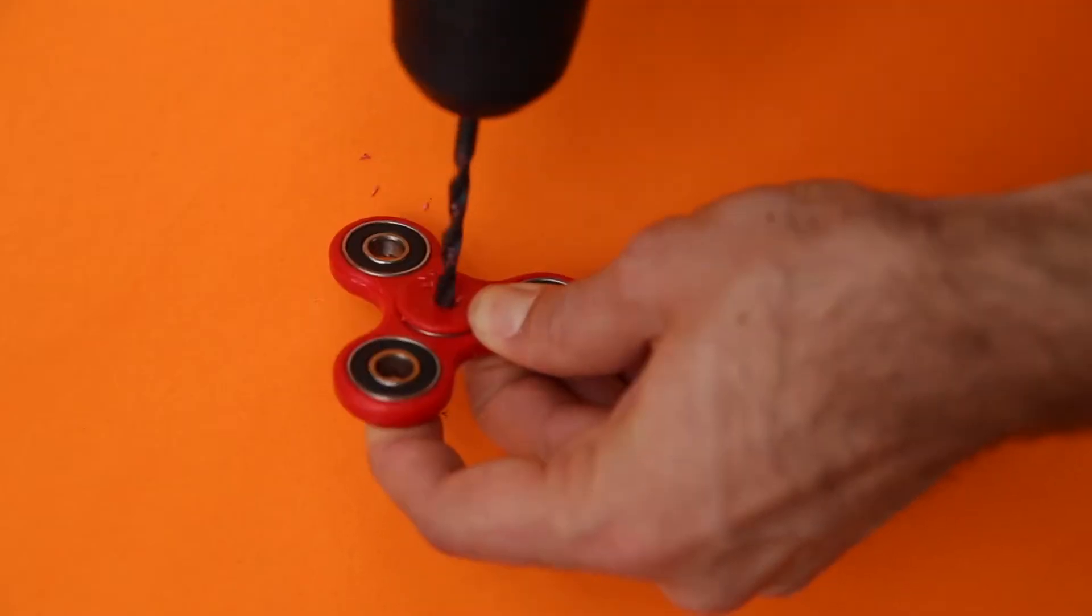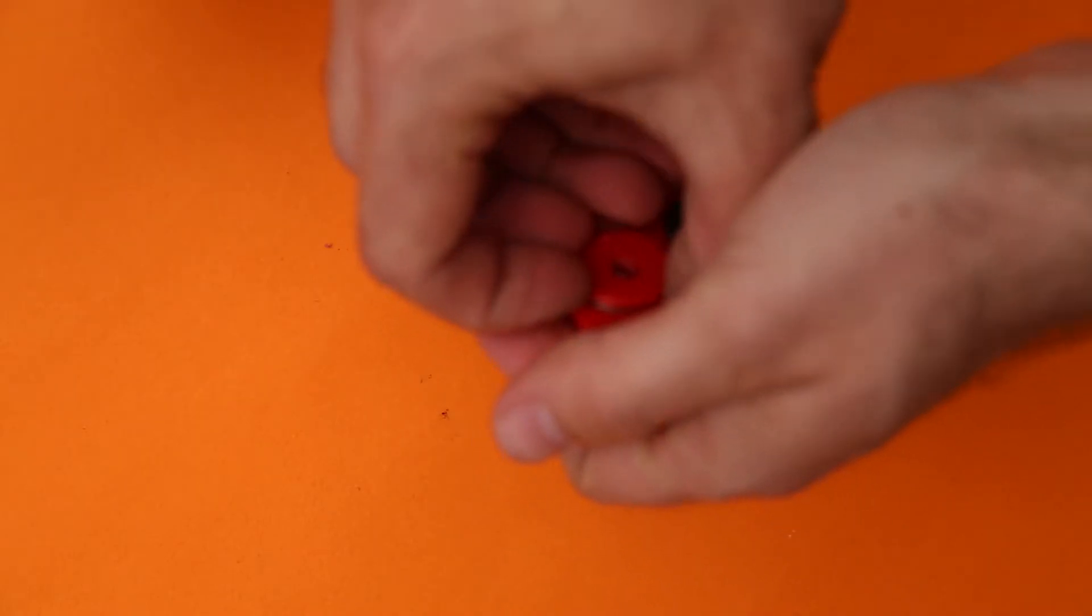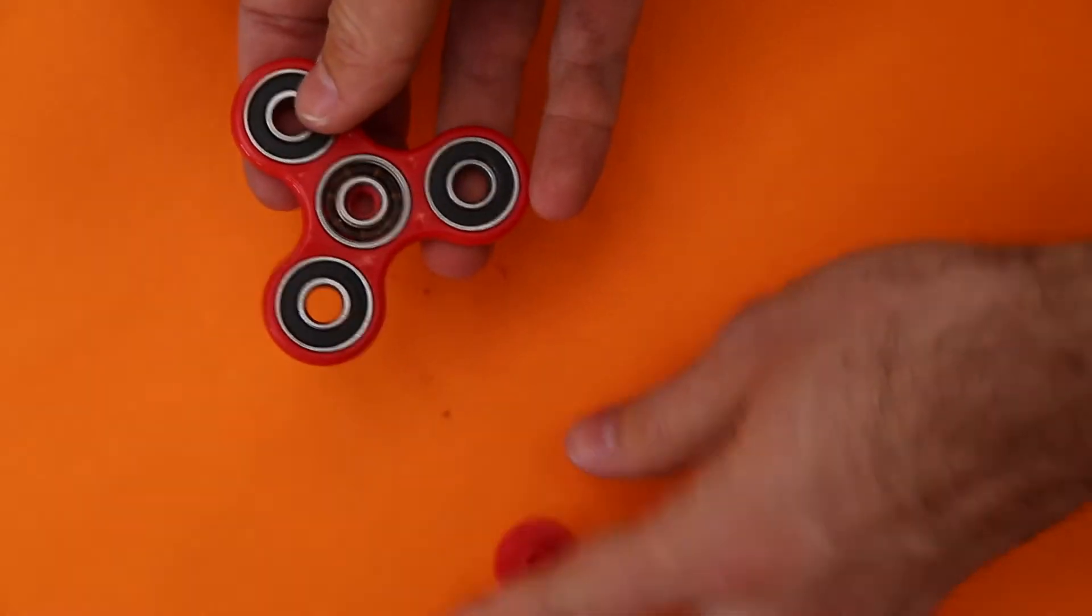First of all, we are going to make a central hole in the fidget spinner using the drill to hold it.